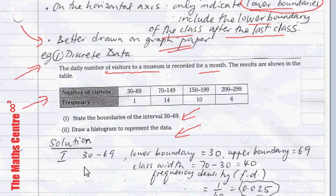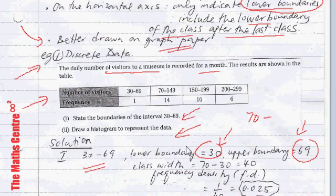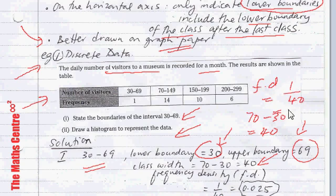For the interval 30 to 69 with discrete data, the lower boundary is 30 and the upper boundary is 69 — you don't go 0.5 before and after because this is discrete. The class width is the lower boundary of the next class (70) minus the lower boundary of this class (30), giving 40. The frequency is 1, so the frequency density is 1 over 40, which equals 0.025.